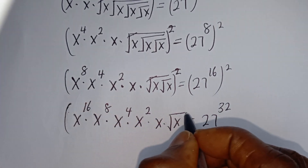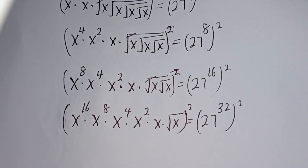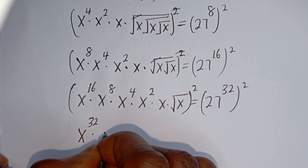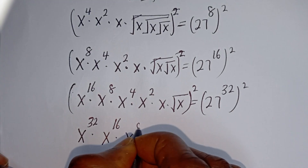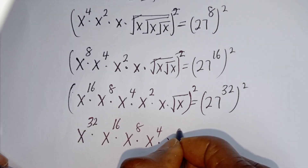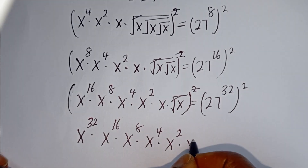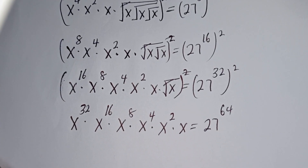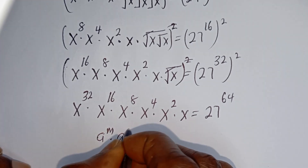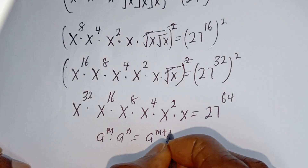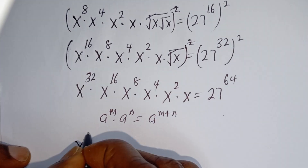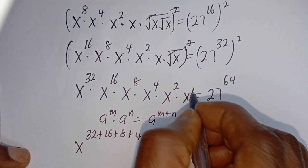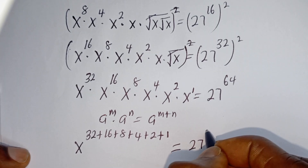Now let's square both sides one final time to remove the last square root. We get s to the power of 32, times s to the power of 16, times s to the power of 8, times s to the power of 4, times s squared, times s, equals 27 to the power of 64. Using the rule that a^m times a^n equals a^(m+n), this becomes s to the power of 32 + 16 + 8 + 4 + 2 + 1, equals 27 to the power of 64.